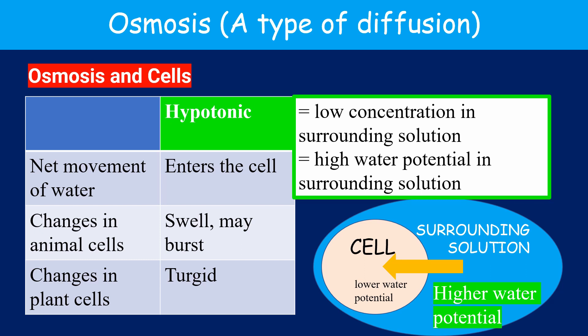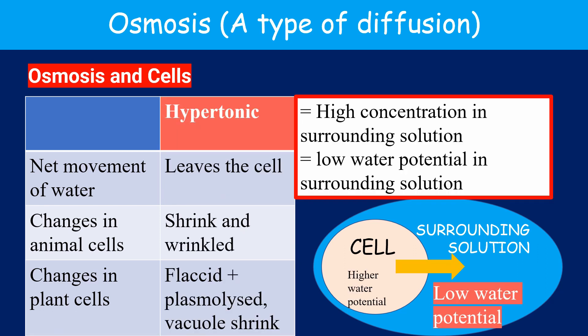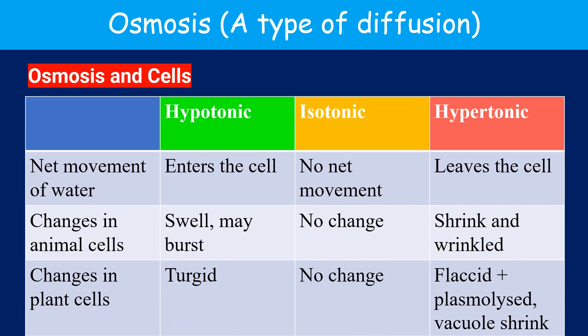A hypotonic solution has a high water potential, so when the cell is placed in a hypotonic solution, there will be a net movement of water molecules into the cells. Animal cells may swell and finally burst, while in plant cells, due to the presence of a cell wall, the cell will only become turgid. There will be no net movement of water and no observable change when cells are placed in an isotonic solution. In a hypertonic solution, there will be a net movement of water leaving the cell. Animal cells will shrink and become wrinkled, and plant cells may become flaccid and plasmolyzed — the cell membrane will be partially detached from the cell wall. The table summarizes the effects of hypotonic, isotonic, and hypertonic solutions on cells.